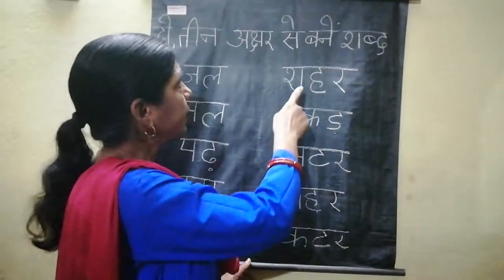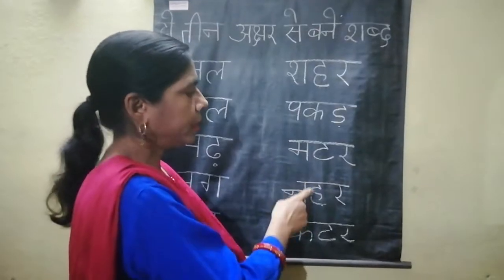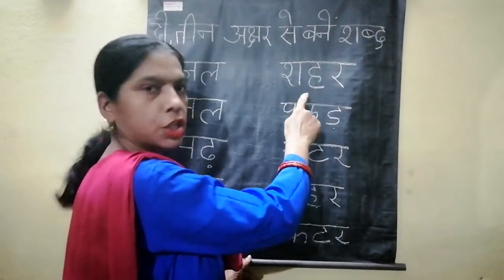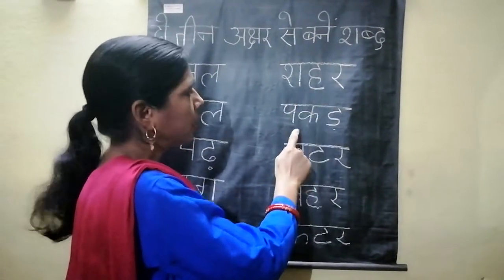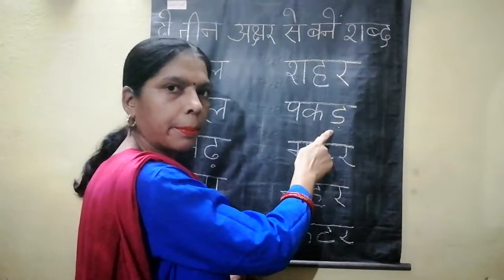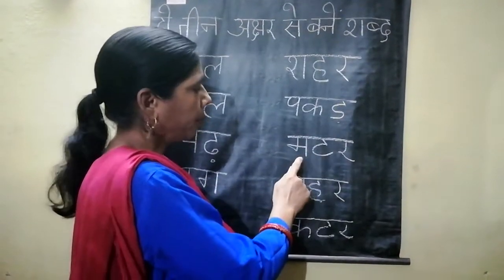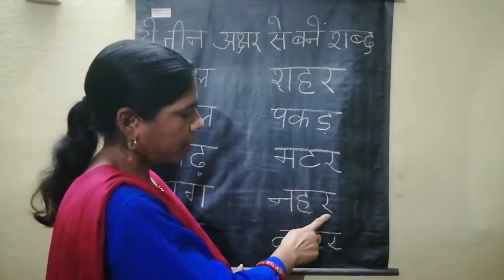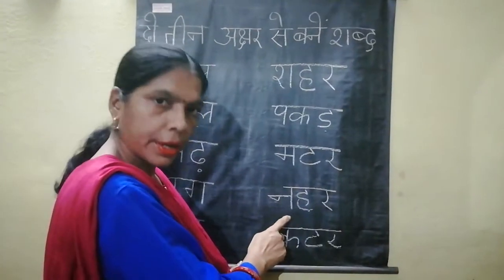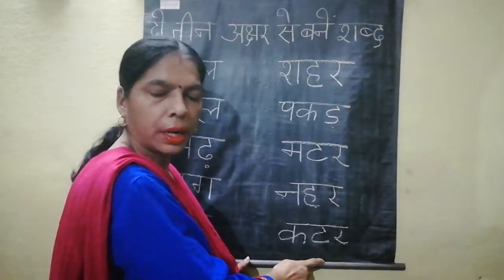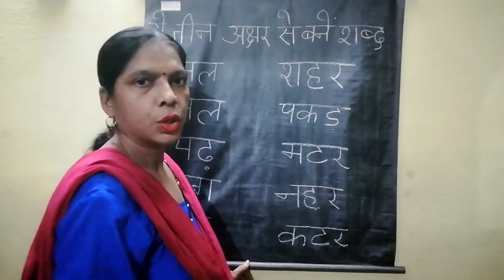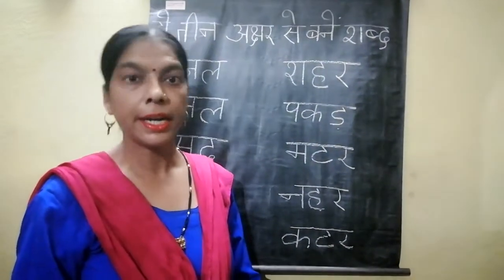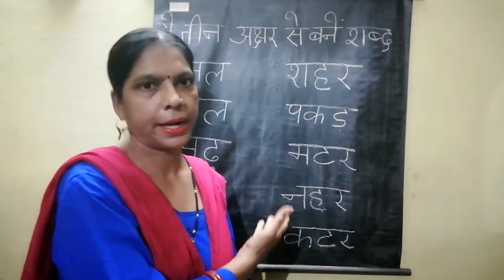Teen akshara wale shabd — so let's start: shahara, shahara, shahar. Pa, ka, ra — pakad. Ma, ta, ra — madar. Neha, ra — neha. Ka, ta, ra — katad. So children, aap one page filter tonight — it's your practice work.